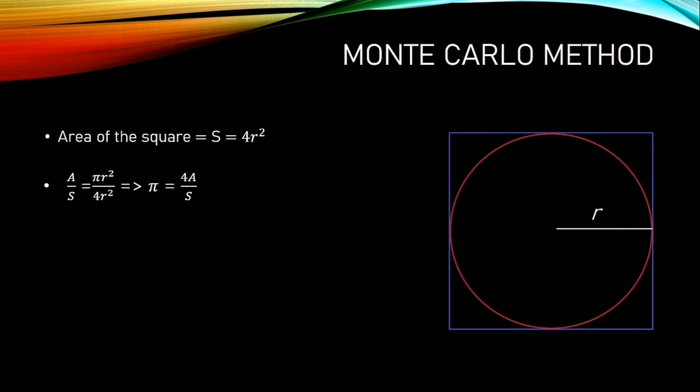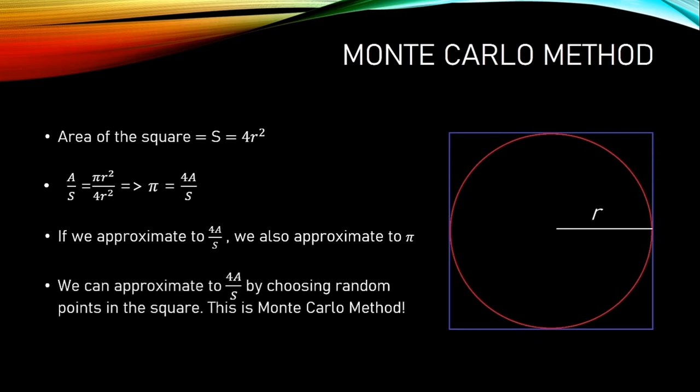Area of the square is 4 times r squared. And π equals 4 times area of the circle divided by area of the square. Which means, if we know the area of circle and the area of the square, we also know pi number. However, we don't know the areas. But we can approximate to areas by choosing random points in the square. And this is Monte Carlo method.